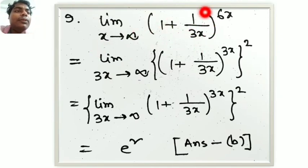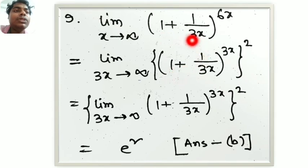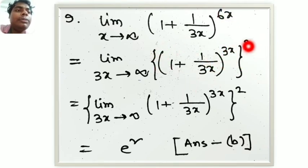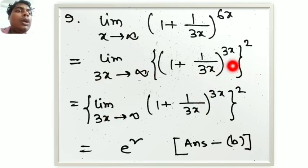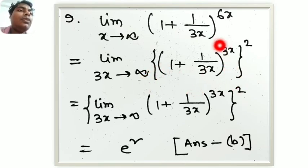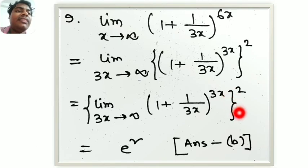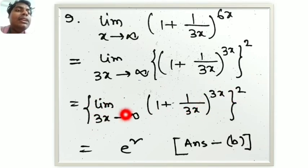Next: limit x tends to infinity of (1 plus 1 by 3x) to the power 6x. We check: when x tends to infinity, 3x tends to infinity. We rewrite the exponent: 6x equals 3x times 2. So the limit becomes [limit 3x tends to infinity of (1 plus 1 by 3x) to the power 3x] squared, which equals e squared. The answer is e squared, option B.